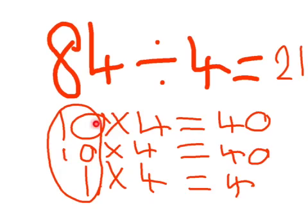Then 10 times 4 again which equals 40. And we end up with 4, so 1 times 4 equals 4.